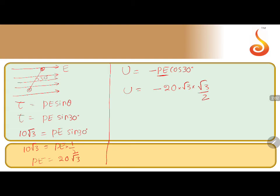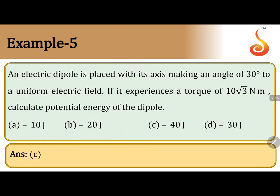So you will get U equal to minus 10 into 3, that equals minus 30 joule. So this is the correct answer. Minus 30 joule. Option D is correct. Option C they gave which is wrong. So option D is correct.